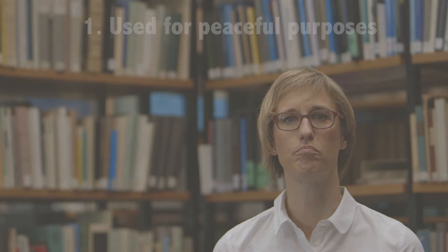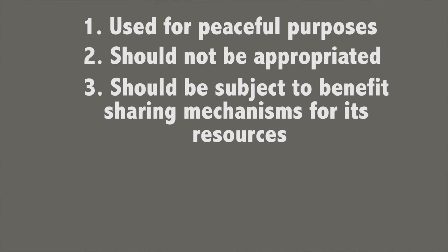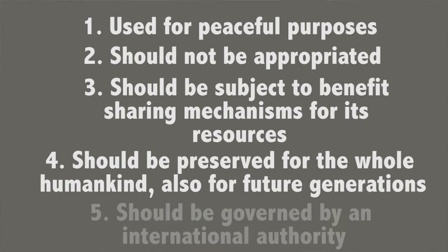Malta proposed at the United Nations in 1967 to declare the whole ocean beyond the territorial sea the common heritage of humankind. This would mean that the ocean beyond national jurisdiction, first, should be used for peaceful purposes only; second, should not be appropriated; third, should be subject to a benefit-sharing mechanism for its resources; fourth, should be preserved for the whole humankind, also for future generations; and fifth, should be governed by an international authority. The common heritage concept tried to prevent the tragedy of the commons that would be inherent to the characteristics of the freedom of the high seas on the one hand, but also the expanding jurisdiction of coastal states on the other hand.